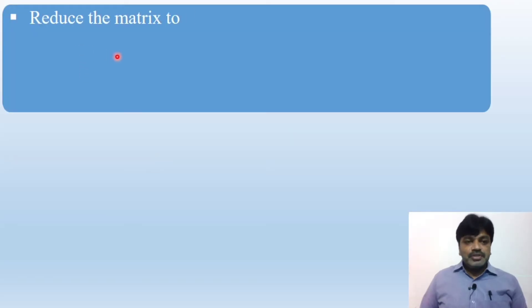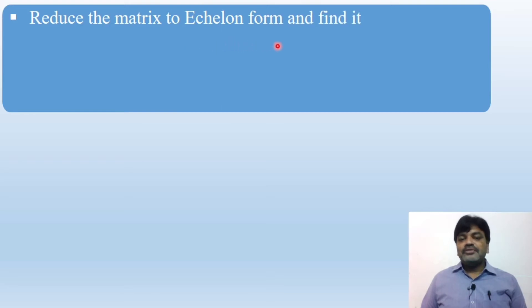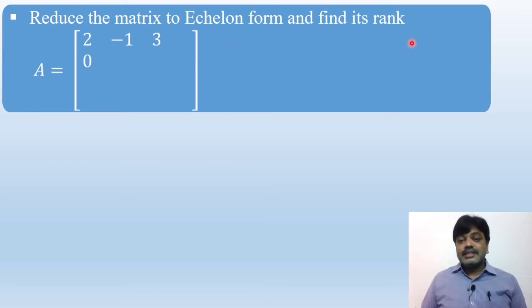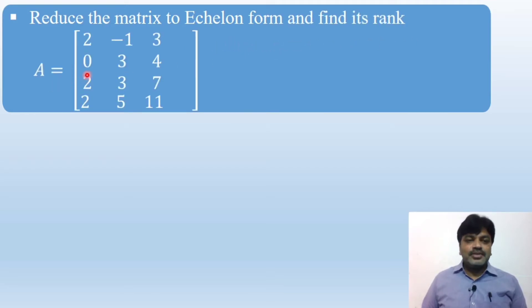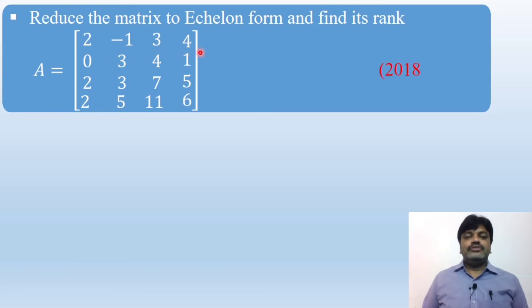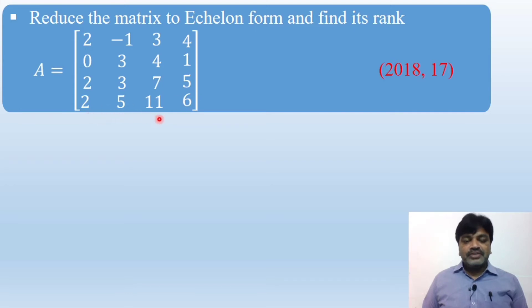Reduce the matrix to echelon form and find its rank. A is equal to: 2, -1, 3, 4 / 0, 3, 4, 1 / 2, 3, 7, 5 / 2, 5, 11, 6.